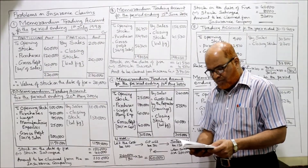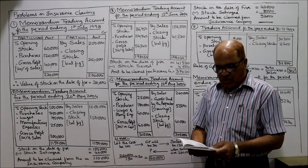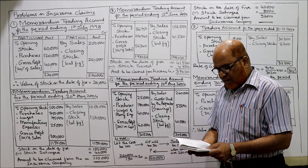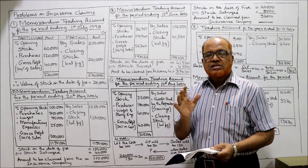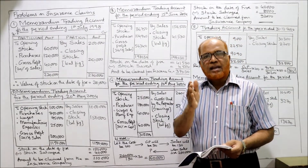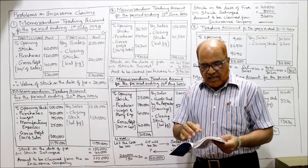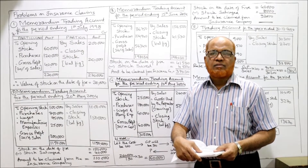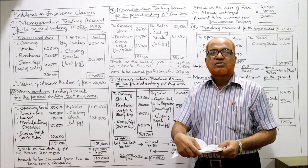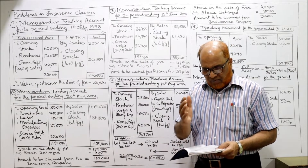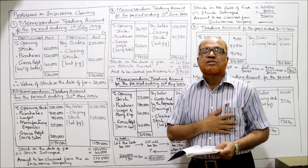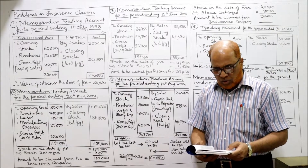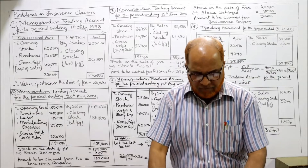Third problem: fire occurred on 15th June 2004 on the premises of a merchant and a considerable part of stock was destroyed. Stock saved (salvaged): 4,500. From the books: stock on 1st April (opening stock, financial year basis) was 36,750; purchases to date of fire: 1,04,940; sales: 1,56,500. Investigation found average gross profit over past five years was 36% on sales. Prepare a statement showing the amount the merchant should claim from the insurance company.